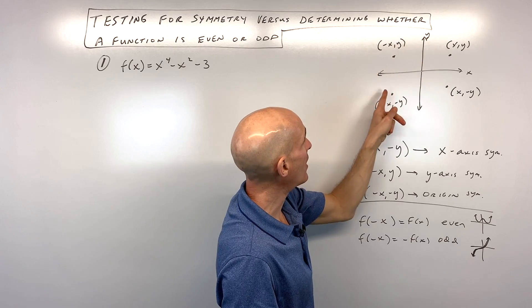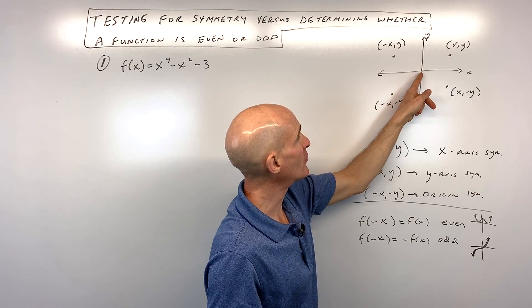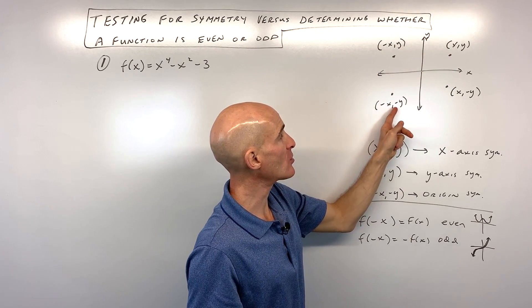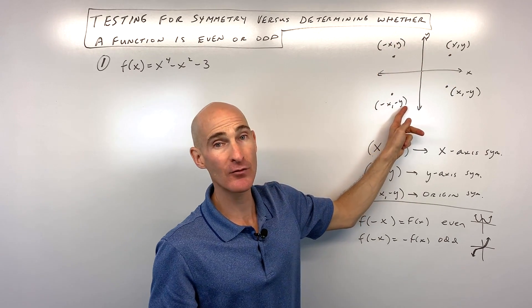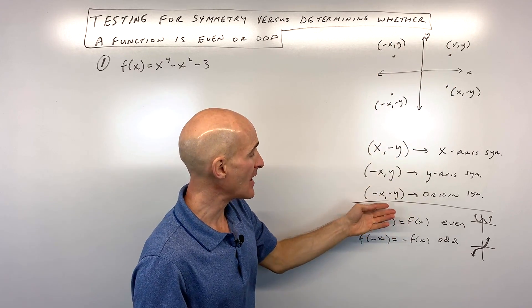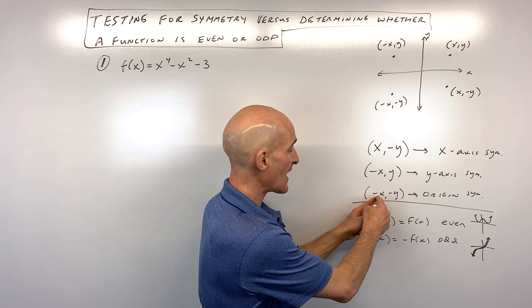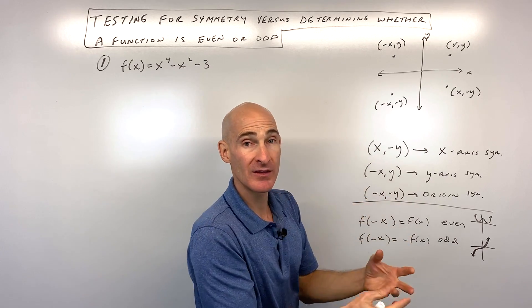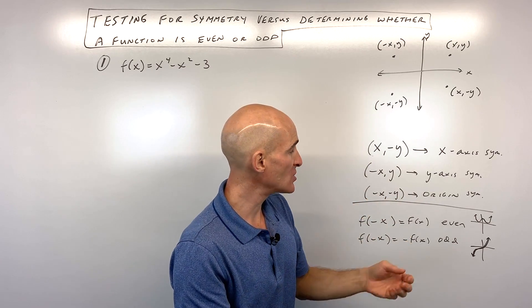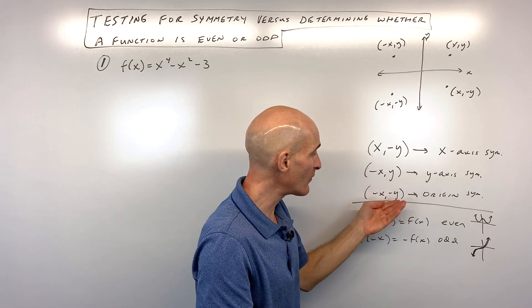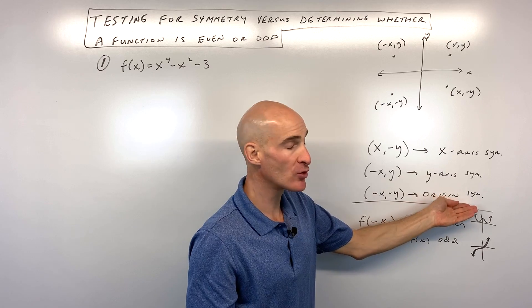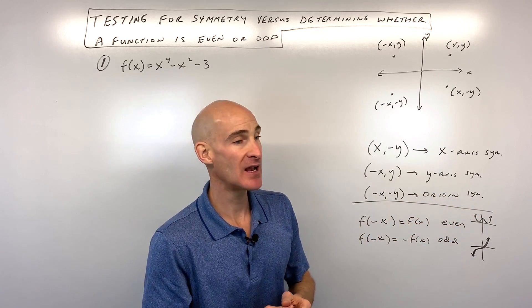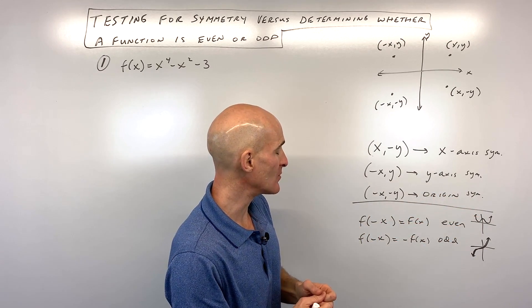If you rotate 180 degrees about the origin, you end up at (negative x, negative y). So to test for origin symmetry, we replace x with negative x and y with negative y in the original equation. When we simplify, if we get the original equation back, it has origin symmetry.